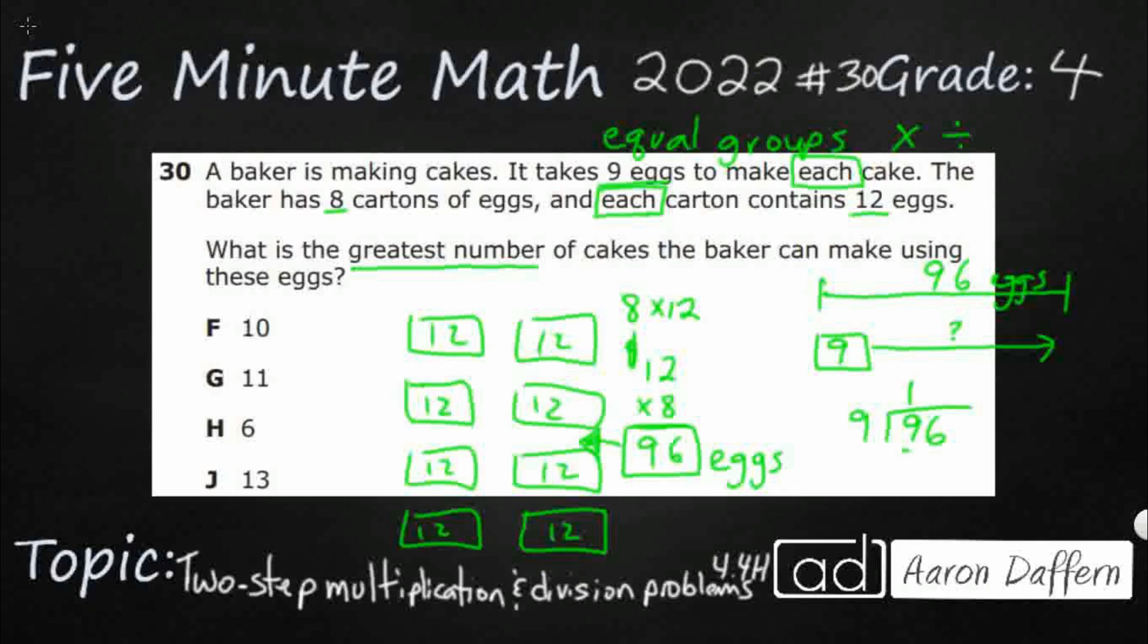One time. So one times nine is nine. We're just ignoring that six right now. We're looking for the least amount of digits possible that it can go into. Always check to make sure your remainder is smaller than your divisor. Zero is definitely smaller than nine.